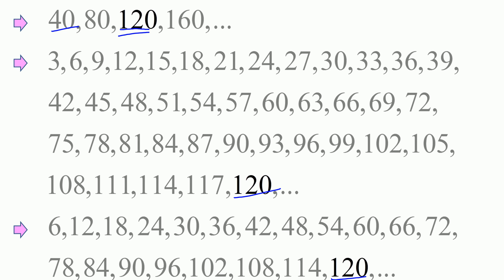What are multiples of 40? Multiples of 40 are 40, 80, 120, 160, and so on. What are multiples of 3? It starts here: 3, 6, 9, 12, 15, and so on. You do end up with 120 as well, and you can continue like 123, 126, etc.